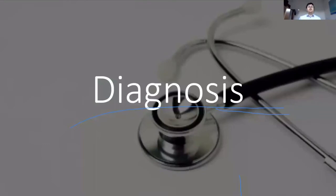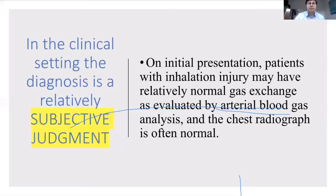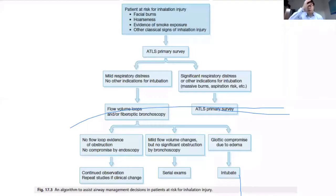How do I diagnose a patient with inhalation injury? As a burn resident receiving a call about a major burn, diagnosis in the clinical setting is a relatively subjective judgment, because at initial presentation the patient may have normal arterial blood gases and normal chest radiograph. You must assess the patient using the ATLS primary survey: airway — picking up inhalation injury, facial burns, hoarseness, evidence of smoke exposure; then assess breathing, circulation, other ABCD injuries, and perform a secondary survey by taking a history of the patient.